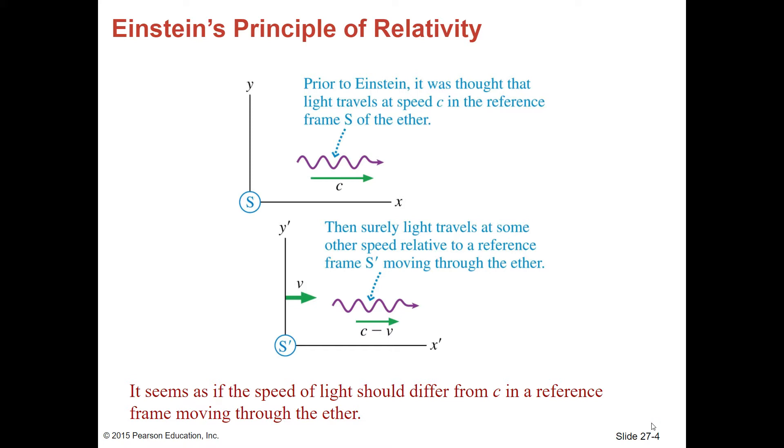It seems as if the speed of light should differ from C, 3.00 times 10 to the 8 meters per second, in a reference frame moving through the ether.